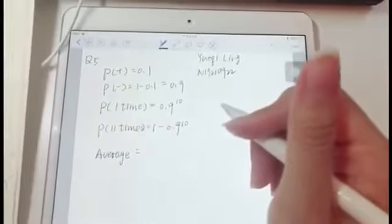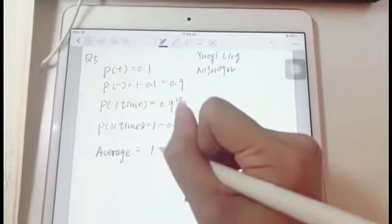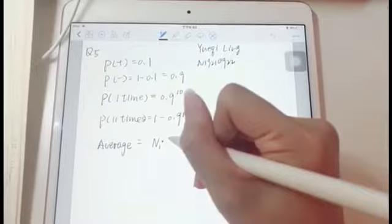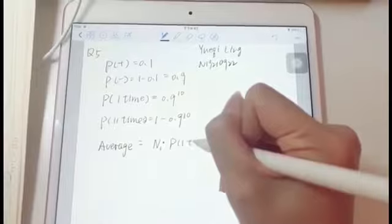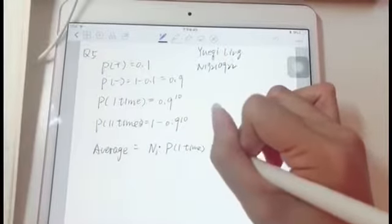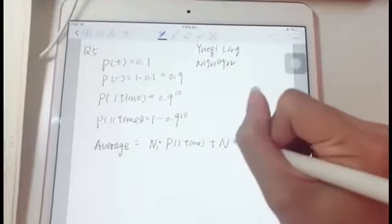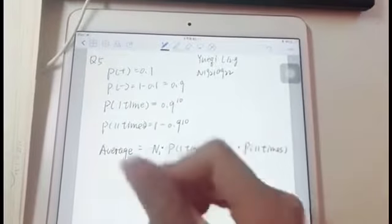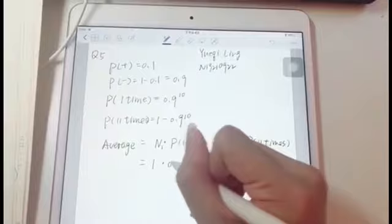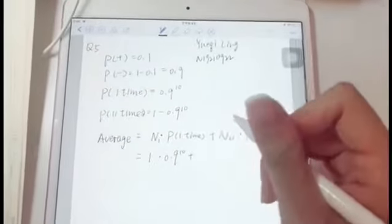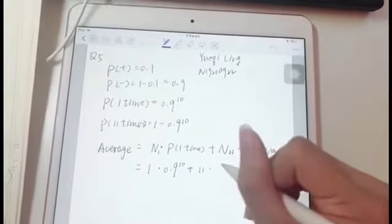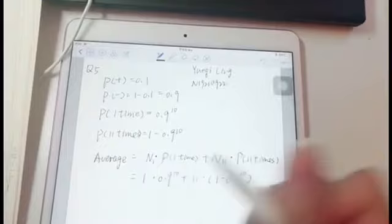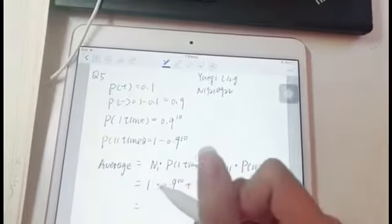The average equals 1 times the probability of 1 time, plus 11 times the probability of 11 times. That is 1 multiply 0.9^10 plus 11 multiply (1 minus 0.9^10), and the answer is